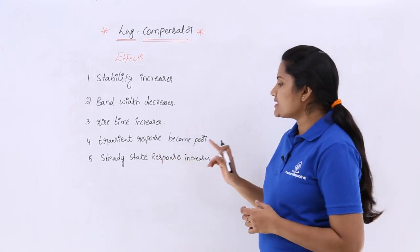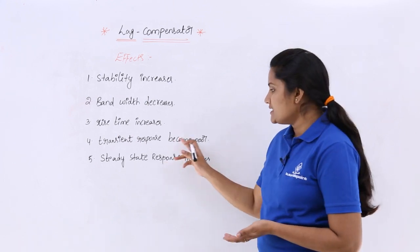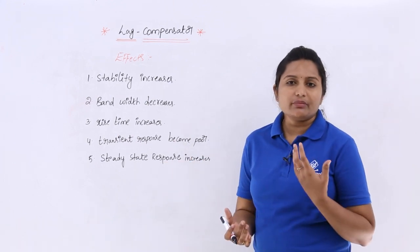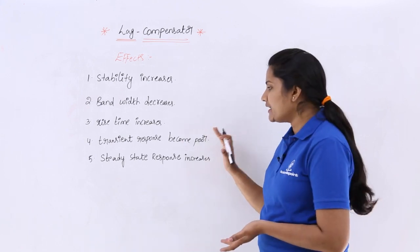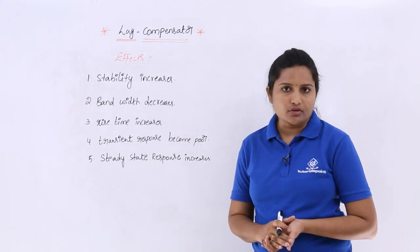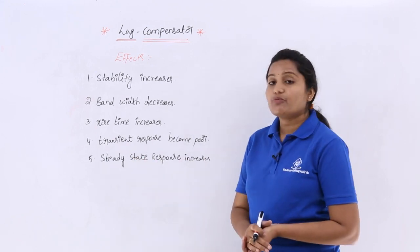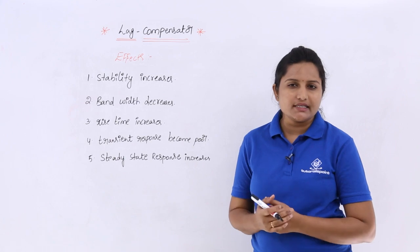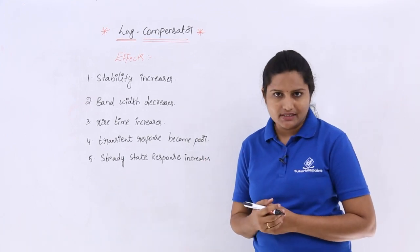Regarding transient response — for the lead compensator the transient response improves, but here with the lag compensator the transient response will become poor. However, the steady-state response will increase, so if you want to improve steady-state response you should use a lag compensator.